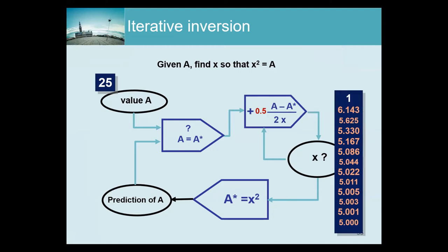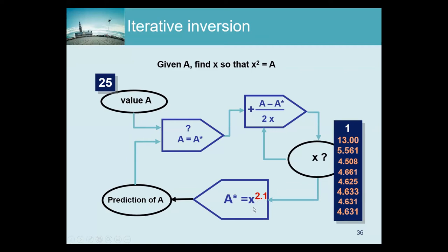Now consider what happens if we modify the update step. If we divide arbitrarily by 2 instead of the derived expression, the algorithm still converges — just slower, requiring more iterations to find the square root of 25. This shows there is robustness in the loop: the update only needs to be good enough. However, if we change the forward operator, the algorithm converges to something else entirely.